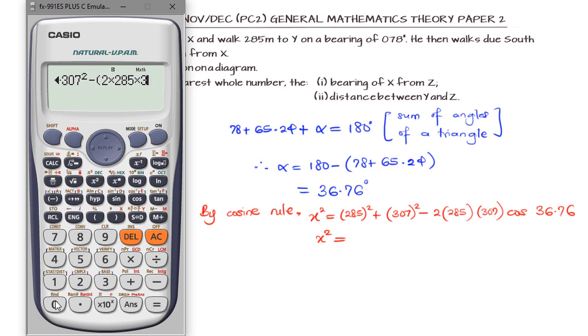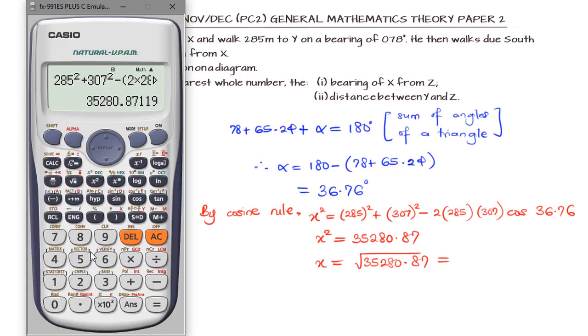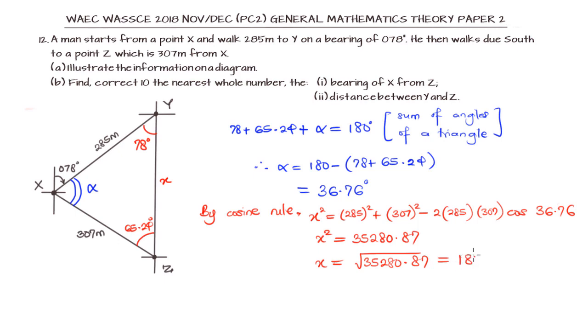Using our calculator to evaluate this, inputting all the values, that will be 35,282.87. So x will now be the square root of 35,282.87. That gives us 187.83. But we are told that we have to find it correct to the nearest whole number, so that will be approximately equal to 188 meters. That is our answer.